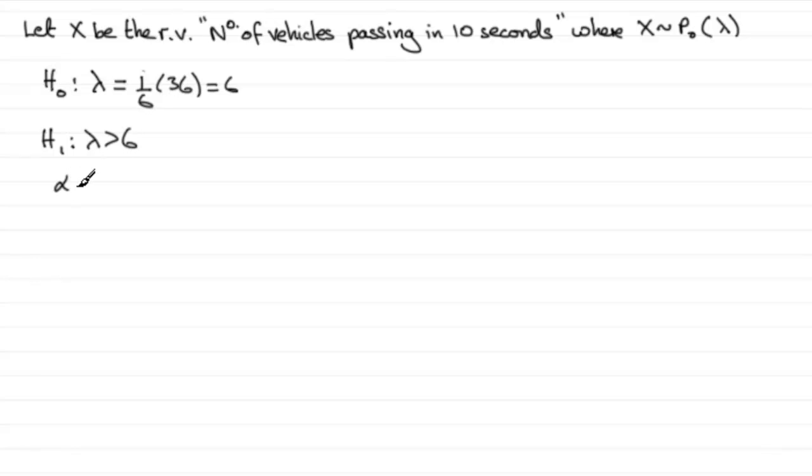The significance level, alpha, is 5%, and we've got to find that critical value. Let's say that observed value is equal to R.